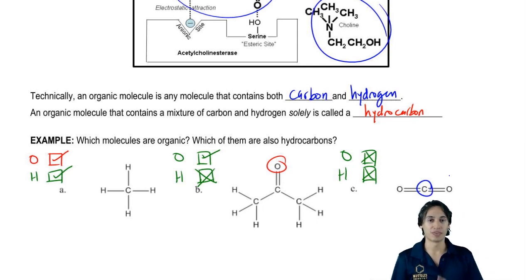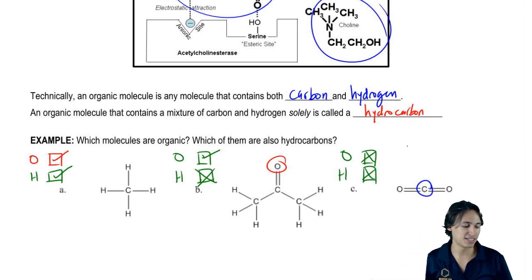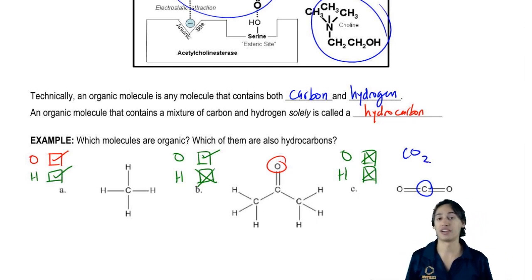In fact, this is what we consider – this can be a little bit confusing – inorganic carbon, like not organic. This would be a form of inorganic carbon because it doesn't have any hydrogens at all. In fact, this is CO2 or carbon dioxide.